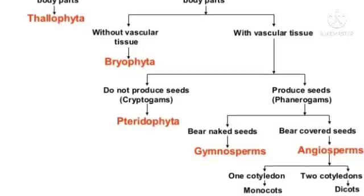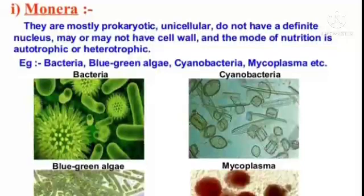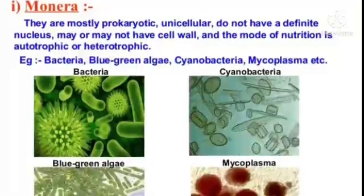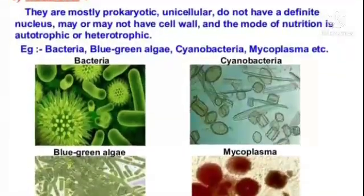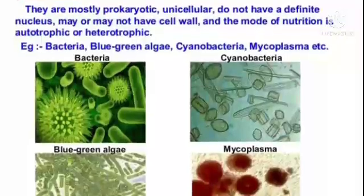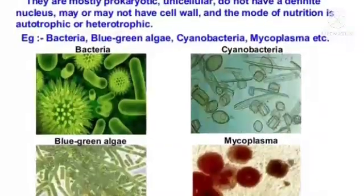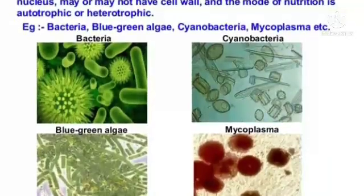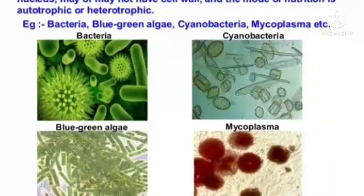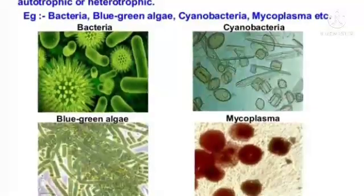Now let us discuss this in more detail. Monera: They are mostly prokaryotic and unicellular, do not have a definite nucleus, may or may not have a cell wall, and the mode of nutrition is autotrophic or heterotrophic. Examples: bacteria, blue-green algae, cyanobacteria, mycoplasma, etc.